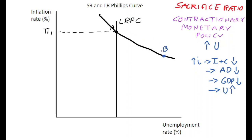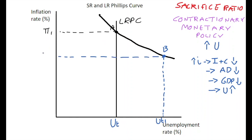The trade-off starts at A and reduces down to B. At point B, the contractionary monetary policy has increased the unemployment rate from U_t to U_t1 at a higher level, but we can also see it has reduced inflation as well.